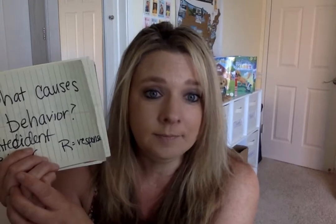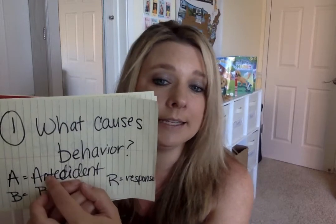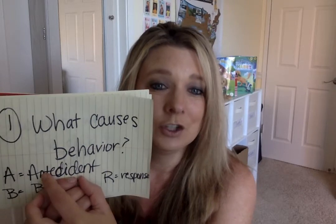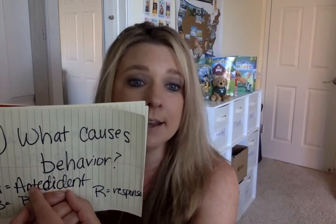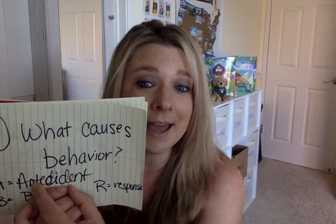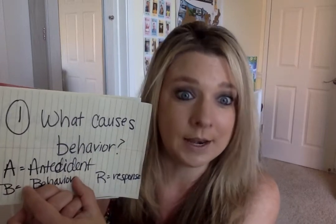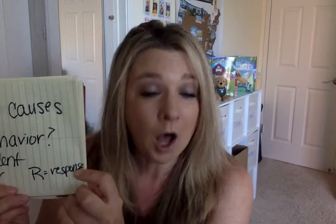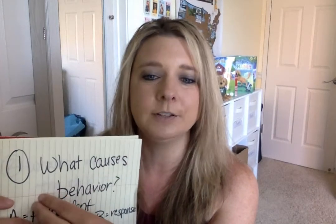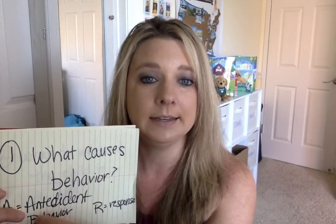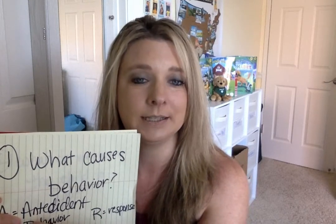If Charlie runs the other direction every time we have a transition in the classroom, then the antecedent is me saying that we're going inside now — it's time for circle, it's time for snack. The behavior is Charlie running away. And the response is what I do in response to him running. So for every behavior, there's an antecedent, there's a cause, and there's a response.